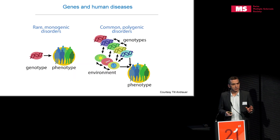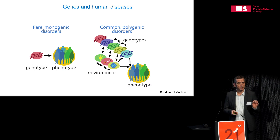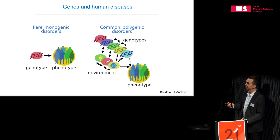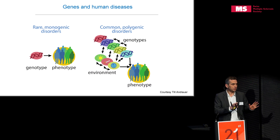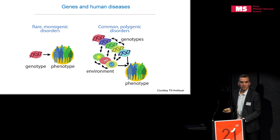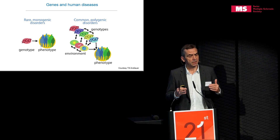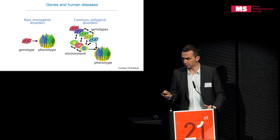The genetic input on multiple sclerosis is complicated. It's not a typical genetic disease — we know diseases where having one gene gives you the phenotype. In MS it's different. It is probably a large number of different genes that impact on MS risk, and environment comes together with those genes, and the mixture of both more or less sets your risk to develop multiple sclerosis.